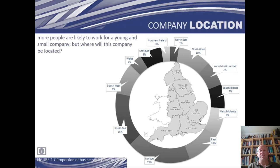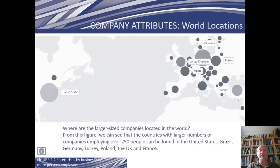Looking at the UK as an example, companies tend to be located around the country. More and more, we're seeing companies set up subsidiaries in other parts of the world, and then the influence of things like national culture become important to understanding how to manage in different parts of the world. There's a greater likelihood to find some larger organisations in certain parts of the world — the United States having a particularly large number, but also in countries like Brazil, Germany, Turkey, Poland, the UK and France.